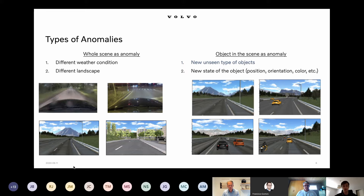For example, if we trained our object detection algorithm on a highway and want to use it in city traffic, this will also be an anomaly for the object detection algorithm. On the right, you can see a much more difficult case — when a particular type of object is an anomaly that was unseen during the training phase.